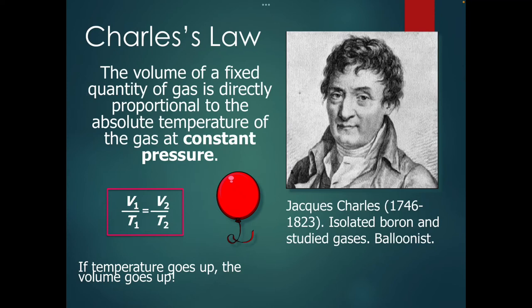Now let's talk about how temperature relates to volume — this is called Charles' Law, created by Jacques Charles, who was well known for isolating boron and also studied gases because he was a balloonist. His law states that the volume of a gas and its temperature are directly proportional, as long as we keep pressure and moles constant. Directly proportional means if one goes up, the other goes up. If we increase temperature, the motion of our molecules increases, collisions increase, and volume will expand if the container allows it. An increase in temperature leads to an increase in volume.